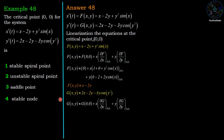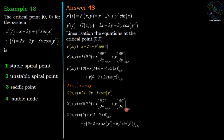Similarly, we linearize g(x,y), which is also nonlinear because it contains the term 3y cos(y²). The approximate linearized form is g(0,0) + x·(∂g/∂x) at (0,0) + y·(∂g/∂y) at (0,0). Substituting the values, g(0,0) = 0, ∂g/∂x = 2 at (0,0), and ∂g/∂y = -5 at (0,0), giving the linearized form g(x,y) ≈ 2x - 5y.